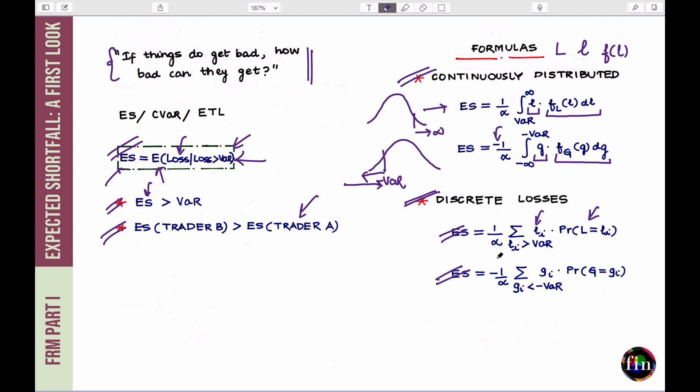And in the case of gains, it will be negated. It will be 1 by alpha. Take only those gains which are to the left of minus VAR. That means, in the left tail and then probability weight them.